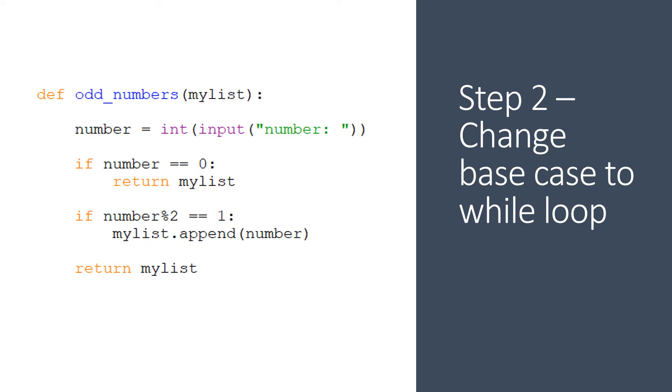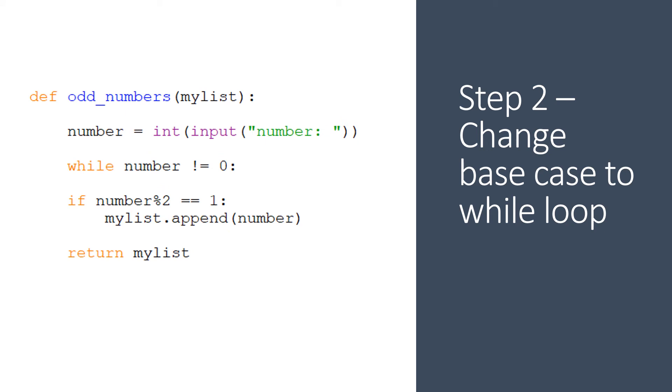The second thing we need to do is to change the base case to make it into a while loop. The base case is when the user enters the number zero. In that case, the iteration, the recursion will stop. We need to change that to the exit condition of a while loop. We've reversed the logic. So the base case was if the number equals zero, the while loop is if the number doesn't equal zero. Because the test in the while loop makes the loop continue.